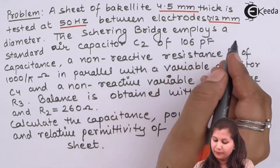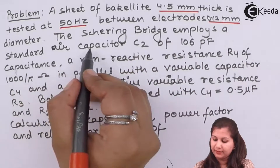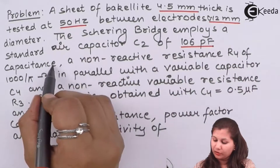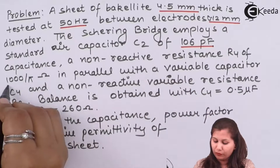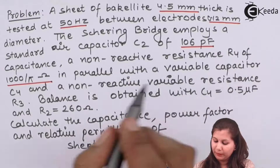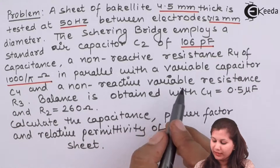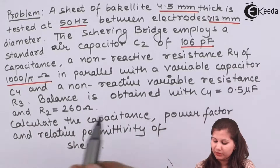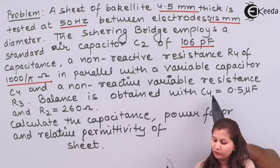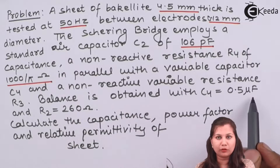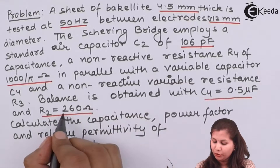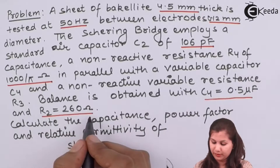The Schering bridge employs a standard air capacitor C2 of 106 picofarads, a non-reactive resistance R4 of 1000/π ohms in parallel with a variable capacitor C4, and a non-reactive variable resistance R3 is also connected. Balance is obtained with C4 equals 0.5 microfarads and R3 equals 260 ohms.